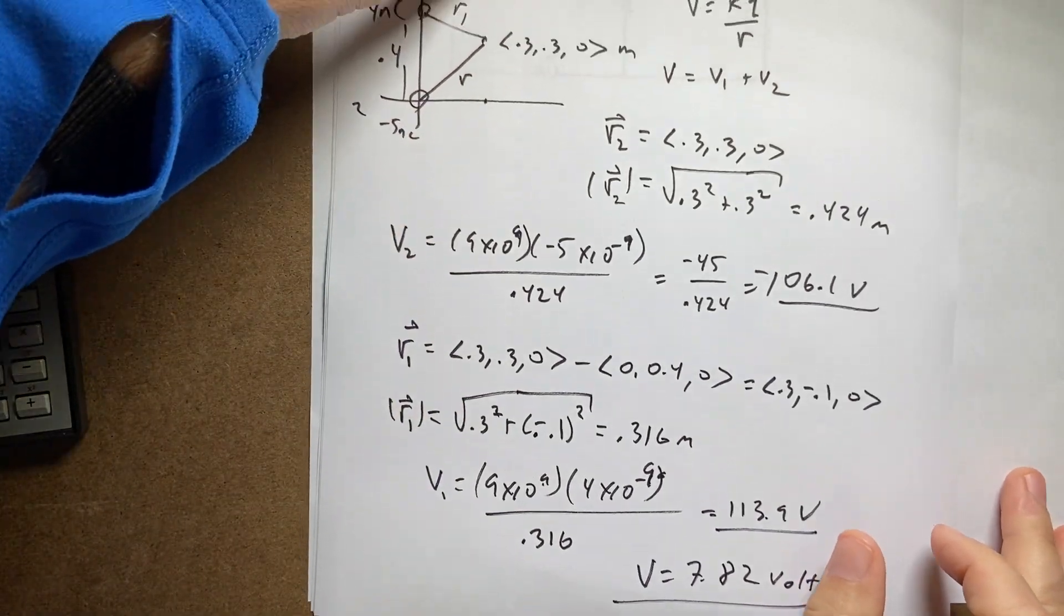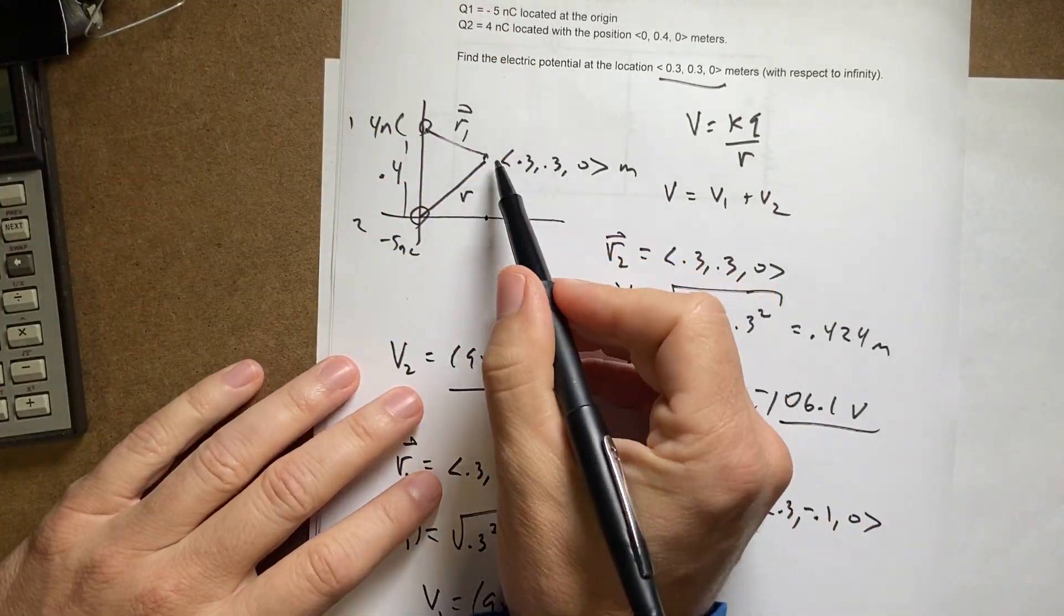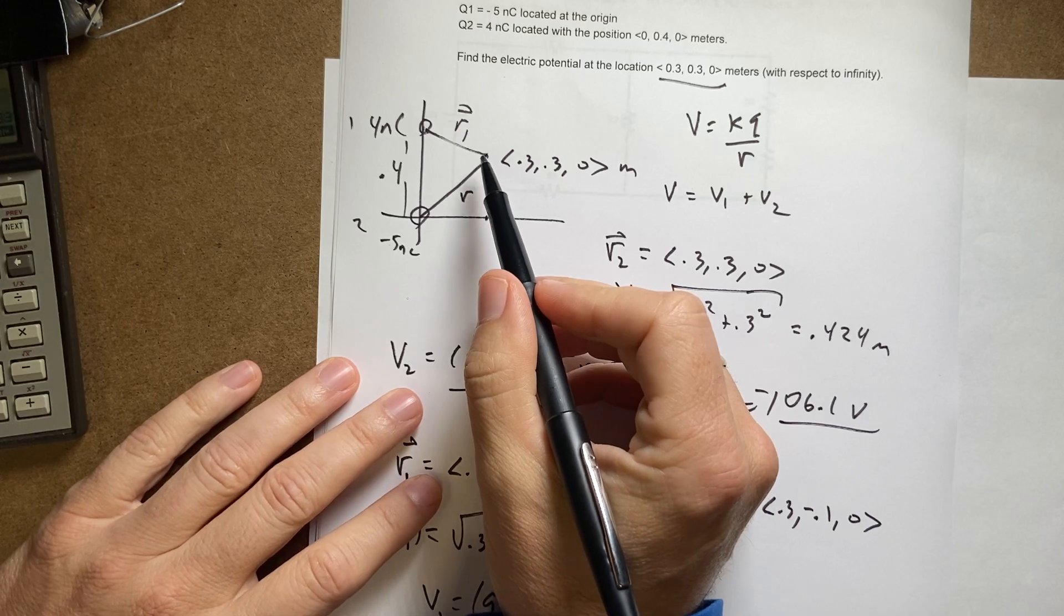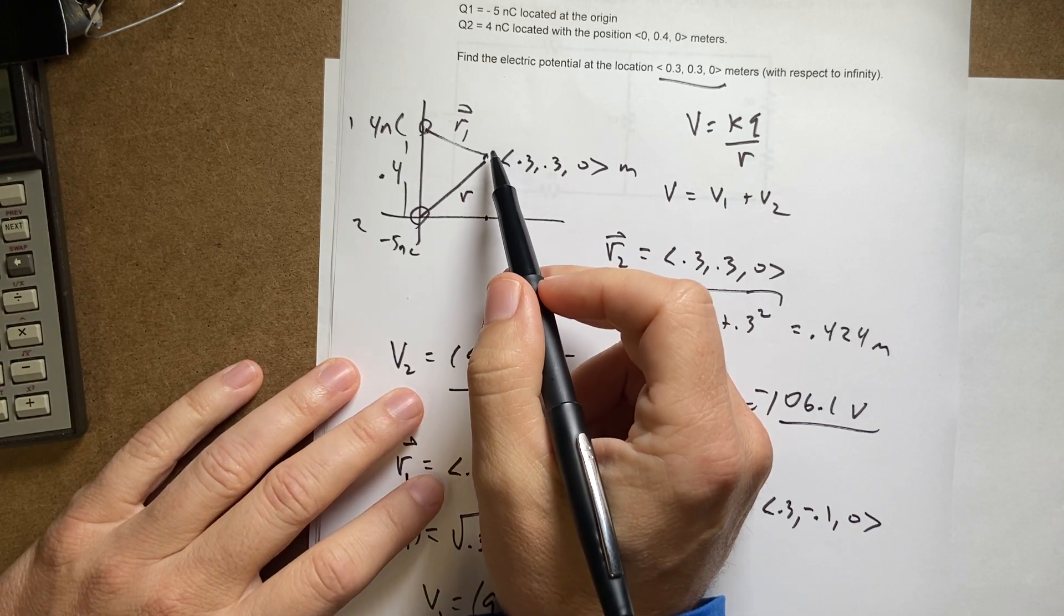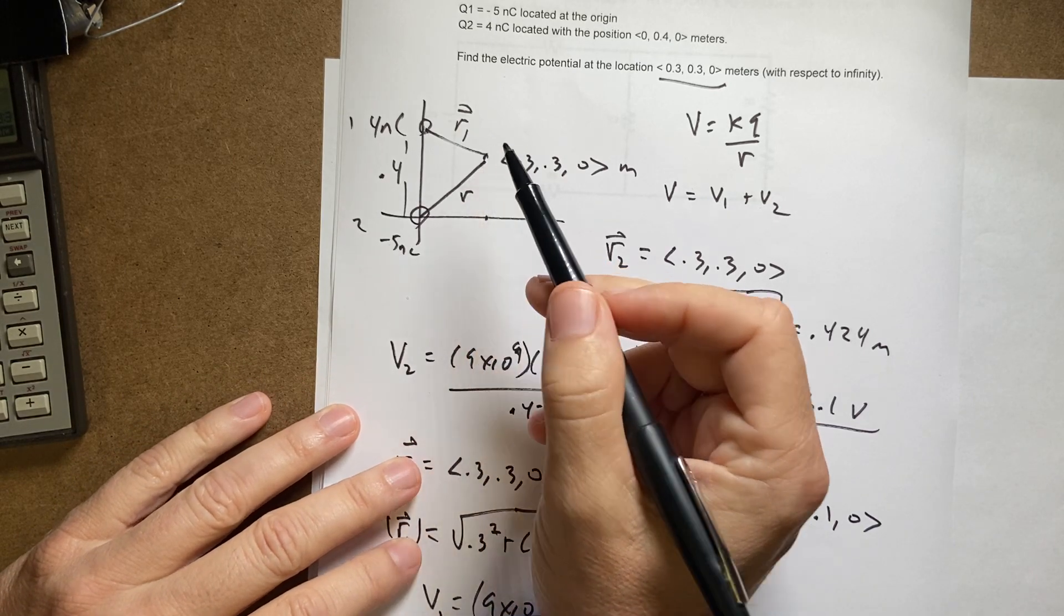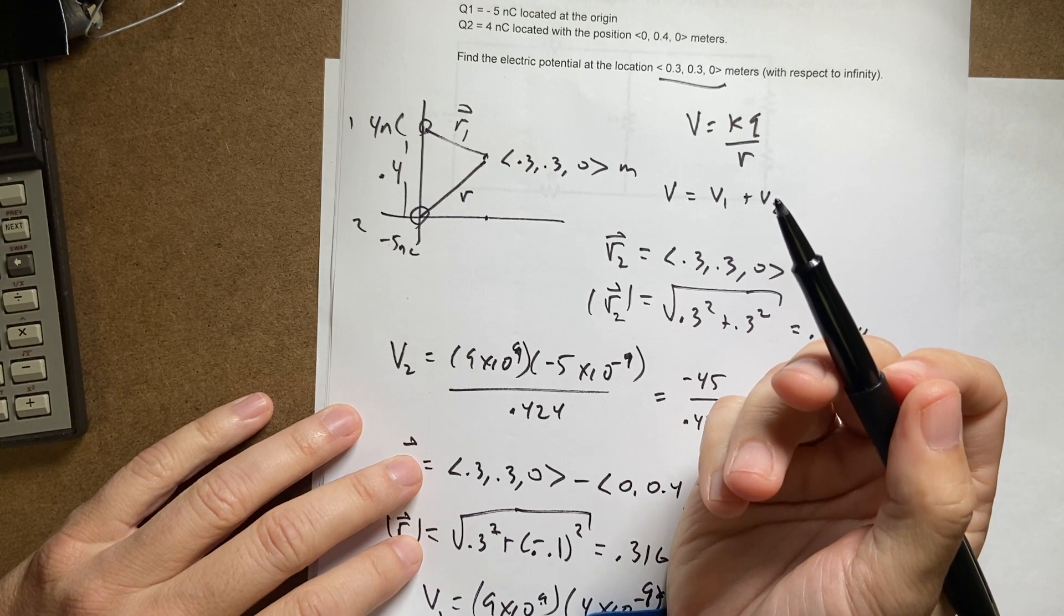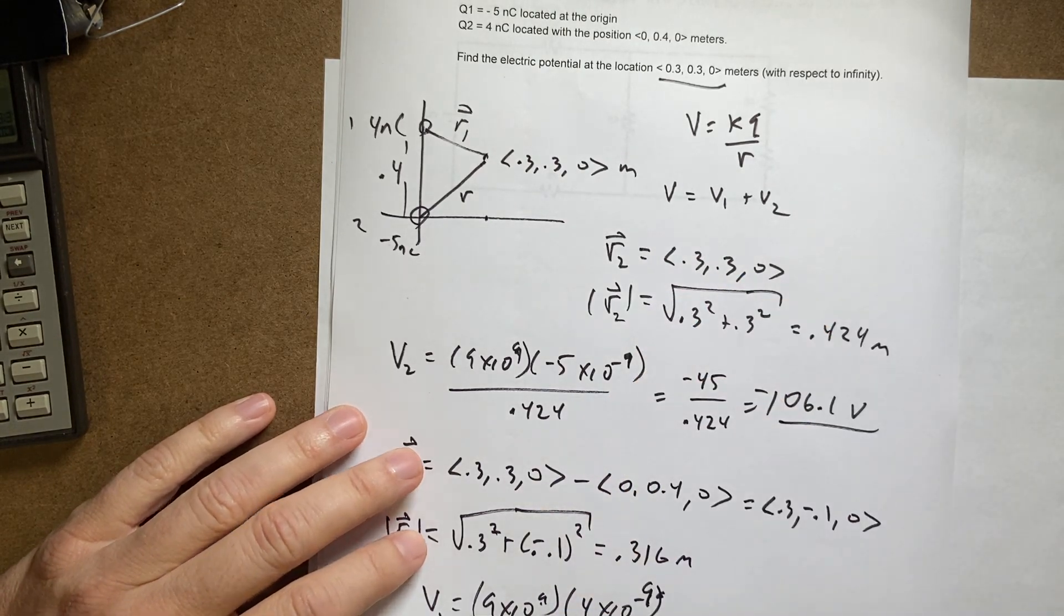So in a way this was more difficult than the previous problem because I didn't have the point that I was interested in on the x-axis. But I didn't have to find components because it was adding potentials which is a scalar. The end.